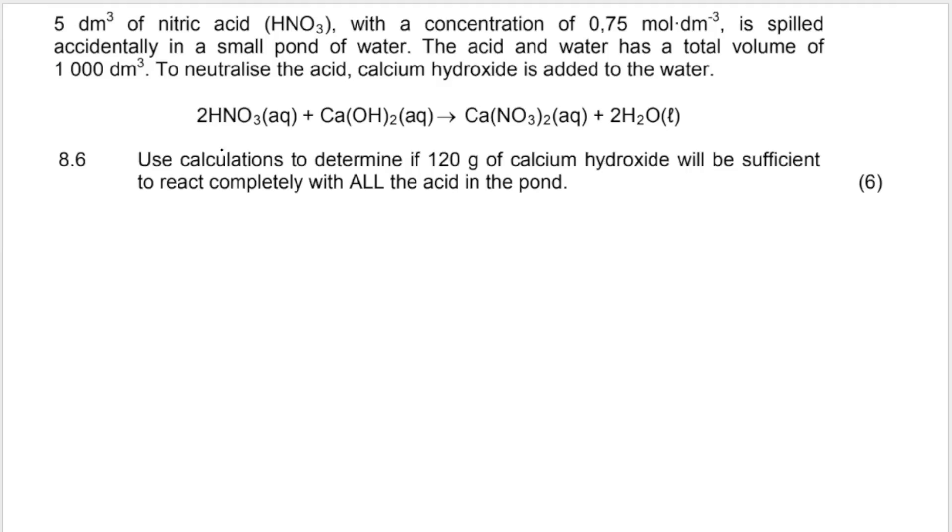My next question says use calculations. It's six marks. So of course we need to use calculations to determine if 120 grams of calcium hydroxide, that is a base over here, will be sufficient, will be enough to react completely with all the acid in the pond. So we want to know if all the acid in the pond will be used up, reacted if I add 120 grams of calcium hydroxide. Now there's different ways to do this.